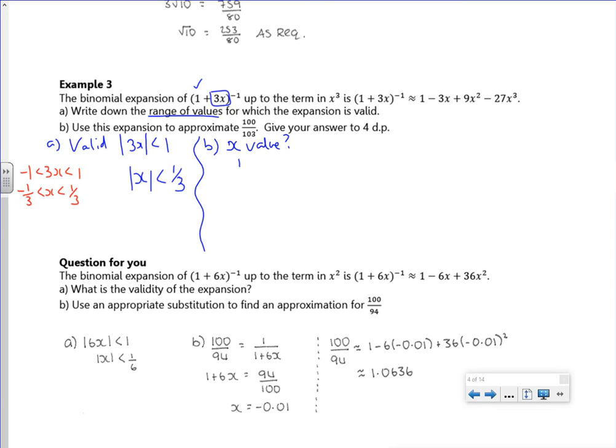Now, this is 1 over (1 + 3x). I want to use it to get an answer for 100 over 103. So if I do a little bit of rearranging, just flip everything, then I can say that 103 over 100, I'm going to use for 1 + 3x.